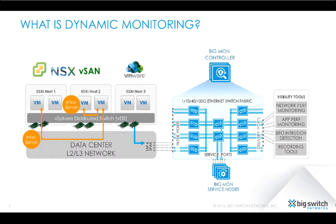In this tech preview we present an alternative approach that achieves on-demand virtual machine monitoring. In the dynamic monitoring mode, the system admin asks the BigMon controller to deliver traffic of any VM they desire to monitor. No pre-configuration of the vSphere distributed switch is necessary, and the system admin interacts with only the BigMon controller to deliver the traffic of chosen VMs. Before we dive into the technical details of this alternative deployment model, we will briefly go over some of our design goals.